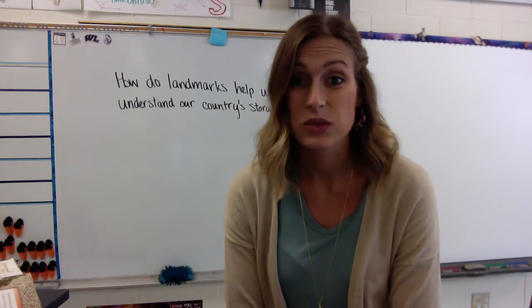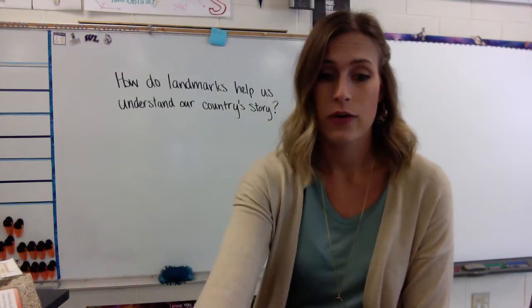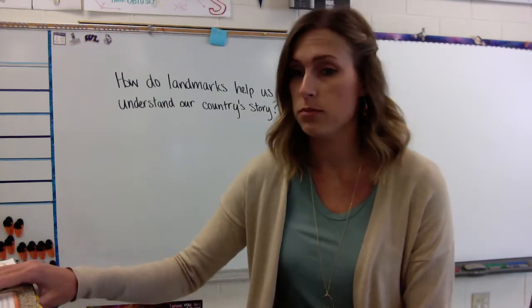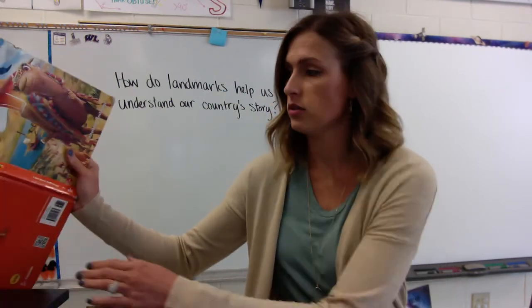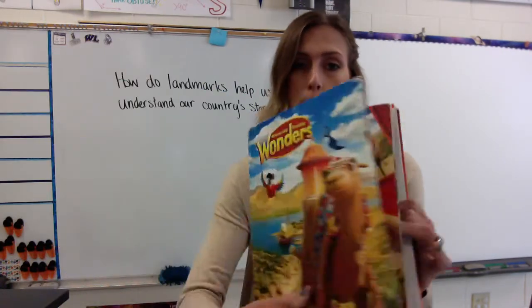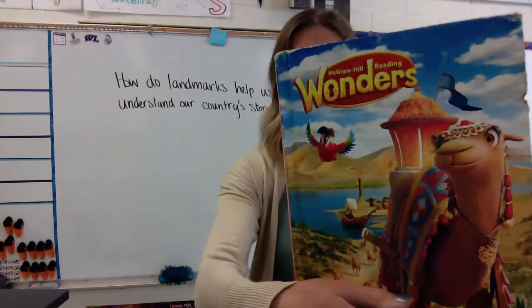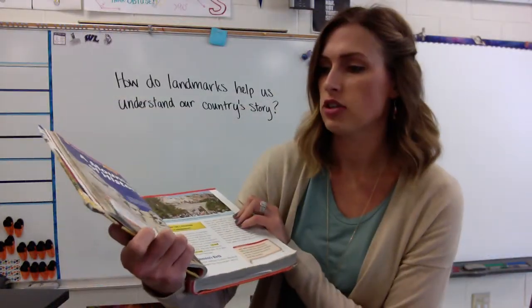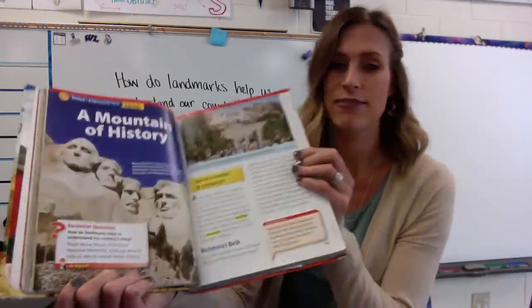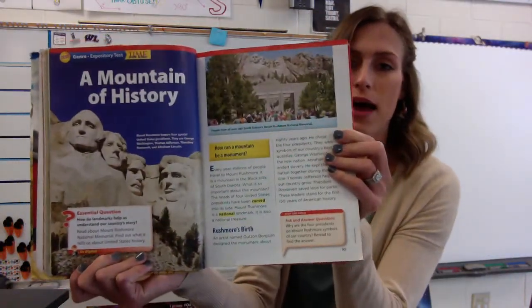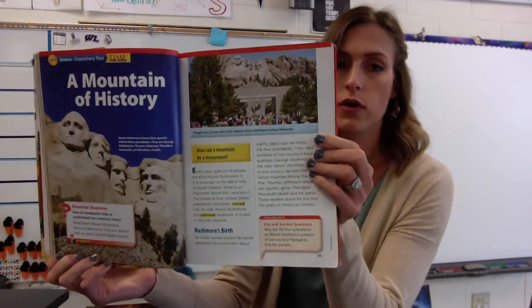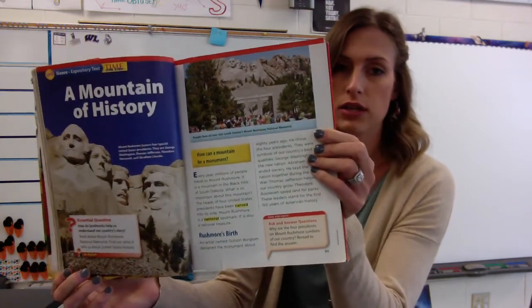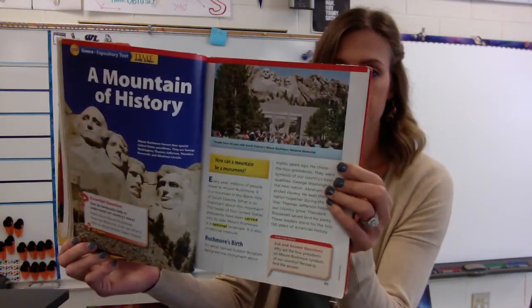Hello, third grade. Today is Wednesday and we're going over our big book story. So in your big reading book, you should be on the page that looks like this. It's page number 94 at the bottom. We're going over A Mountain of History.